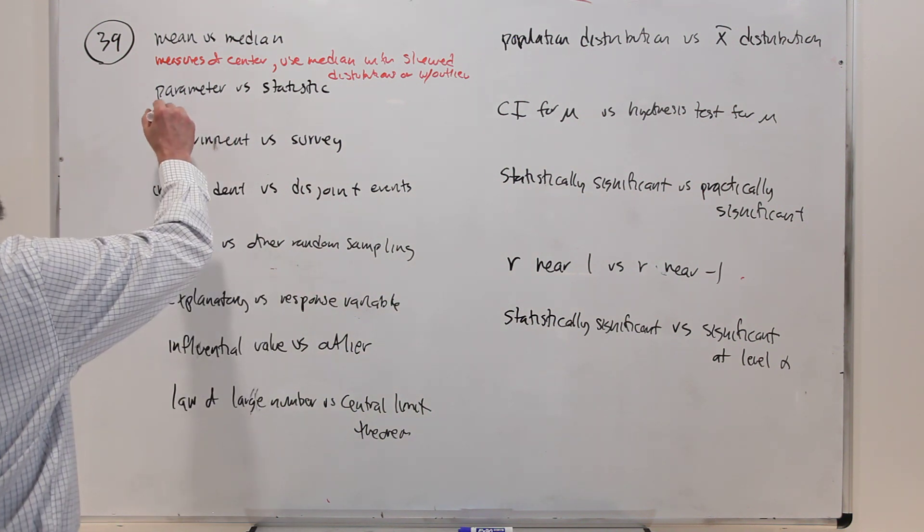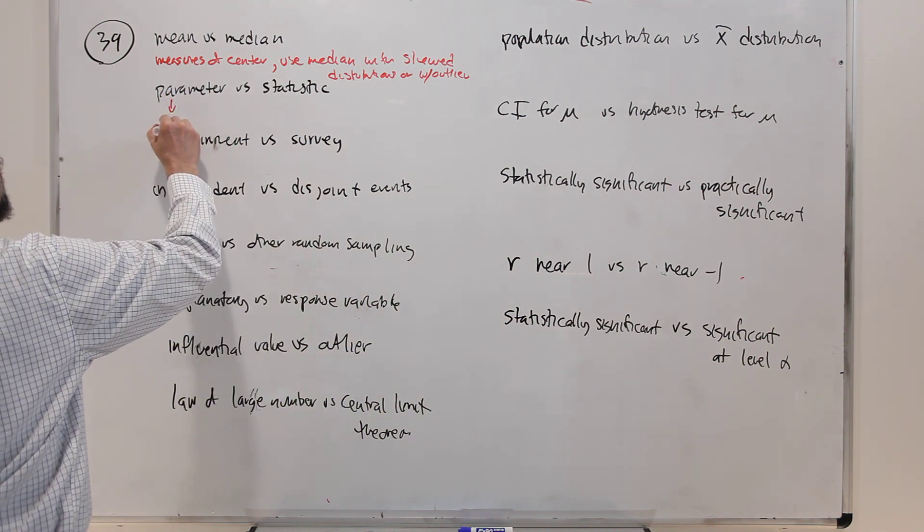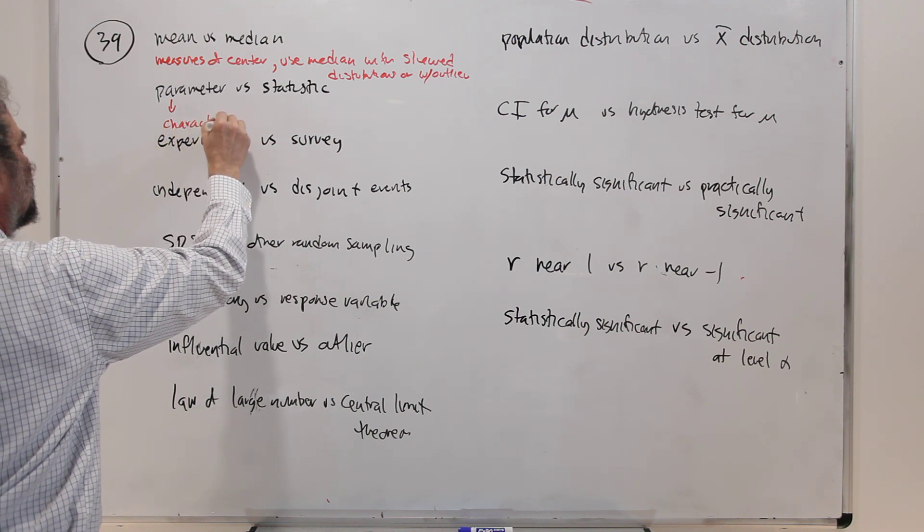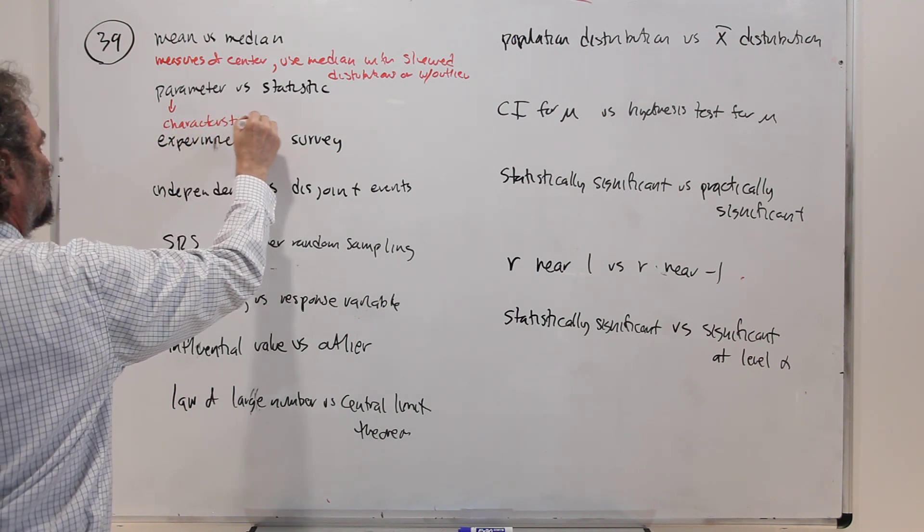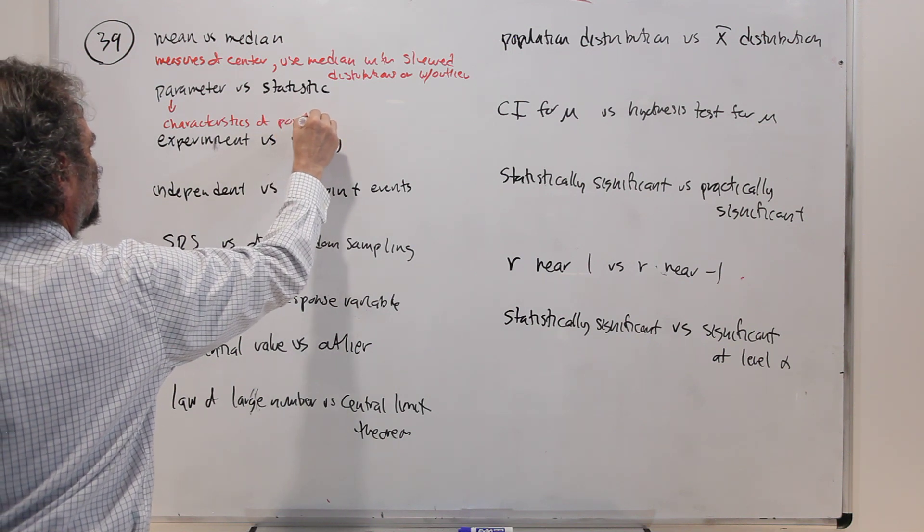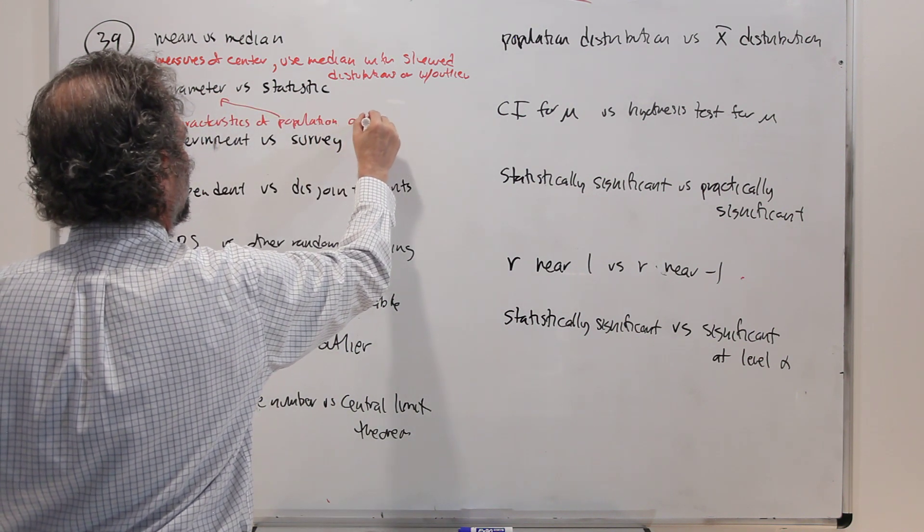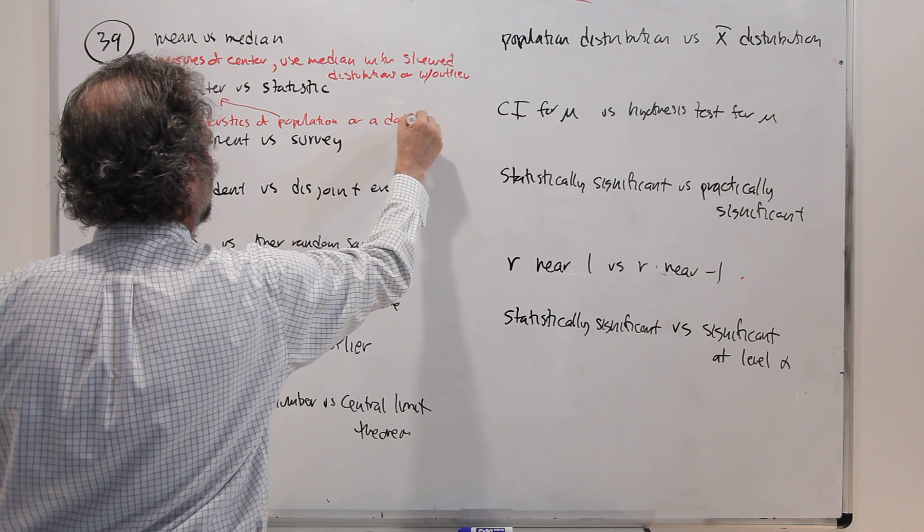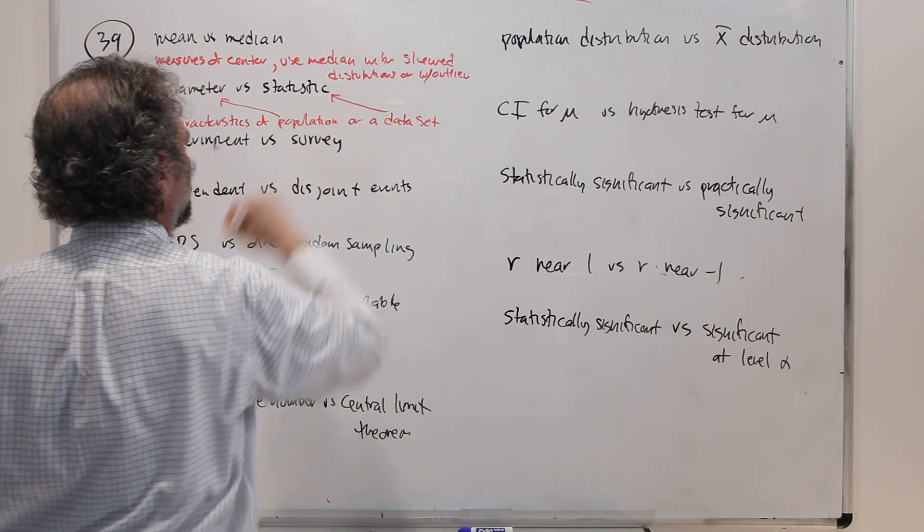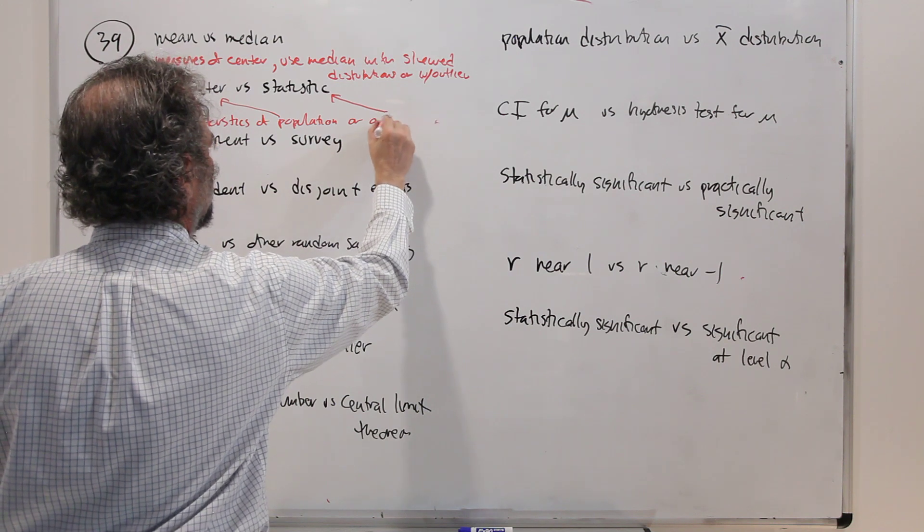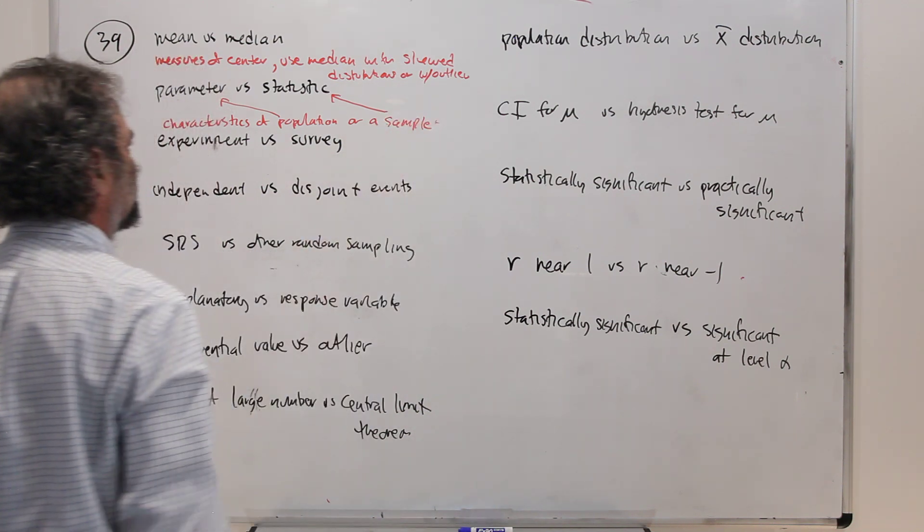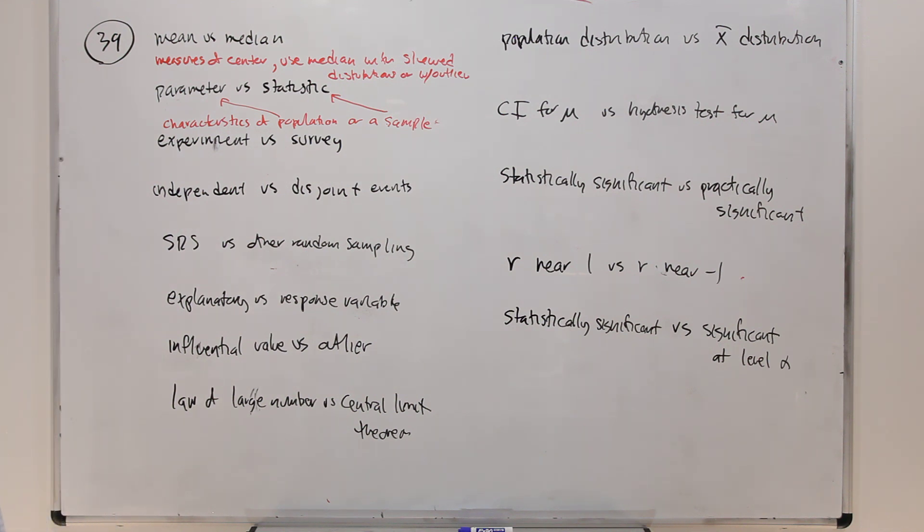Parameters versus statistics. Parameters, they're characteristics of the population. So that's a parameter or a data set or a sample. So maybe I should say or a sample because it matches up a sample. So characteristics of a sample is a statistic. A characteristic of a population is a parameter. When you say mean, it could be a parameter if it's a population or it could be a statistic if it's a sample.